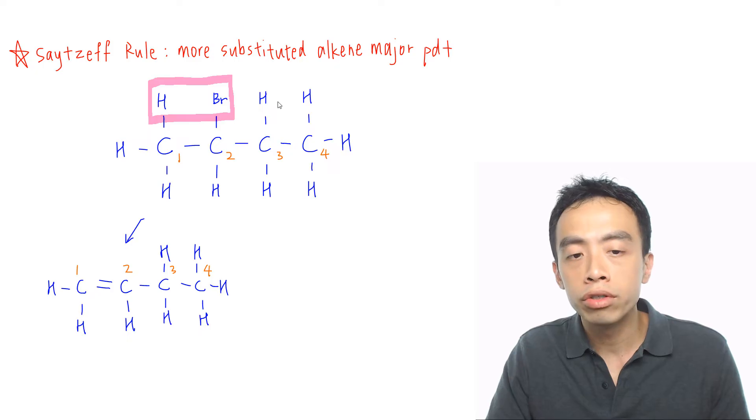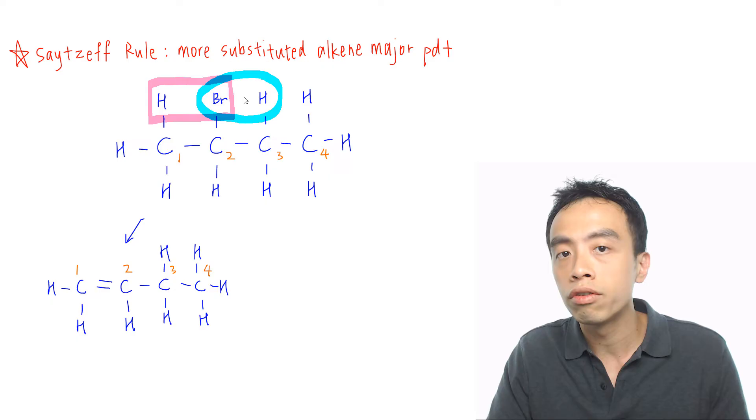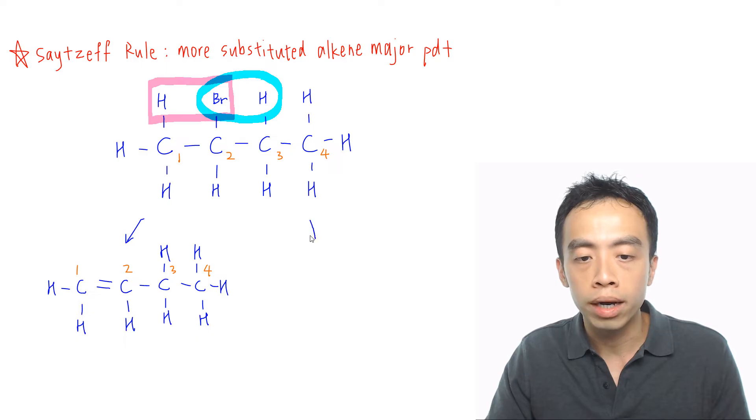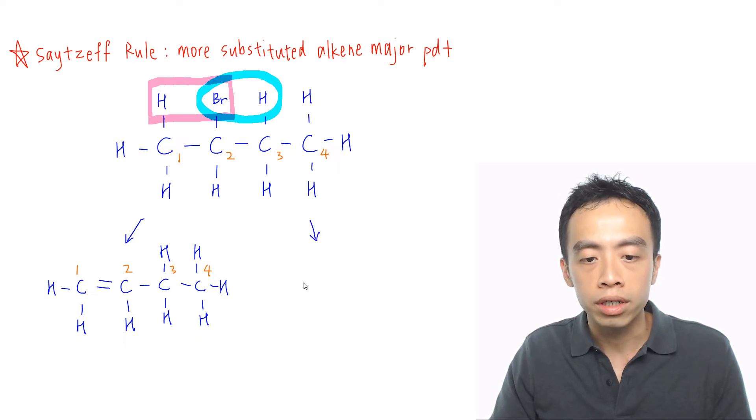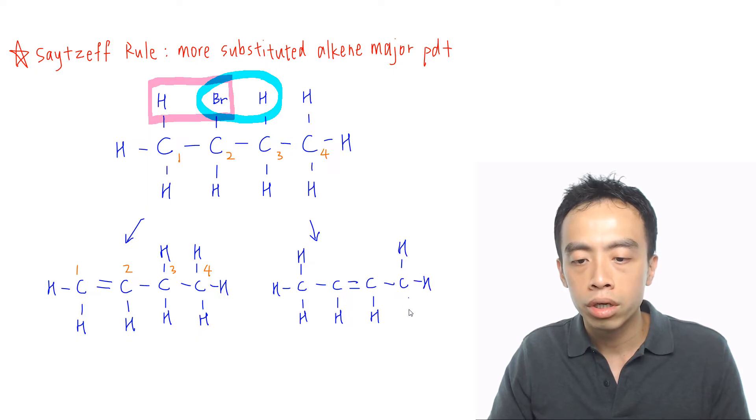Now if I remove the hydrogen from carbon three, so let's say if I take away this hydrogen together with my Br, then the double bond will be between carbons two and three. So again let us draw my products out. I will have a CH3, so this is my carbon position one. Then carbon number two, this is my CH. It will double bond. Then carbon three is a CH, carbon four will be my CH3.